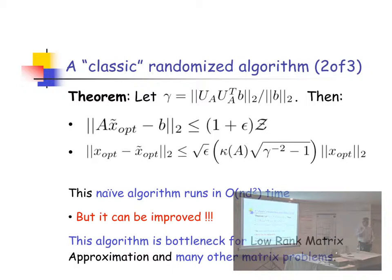Unfortunately, the naive algorithm here takes N times D squared time. So I've given you an algorithm. It's no faster. It might fail with some probability delta, and it's epsilon worse. So that doesn't have to justify a lot for itself. But it can be improved. I'll tell you how to do that.